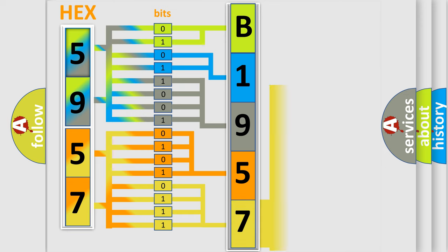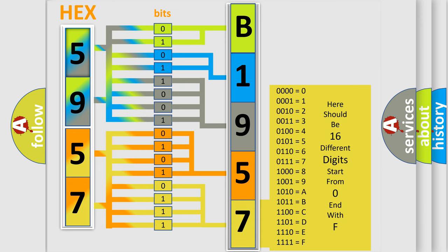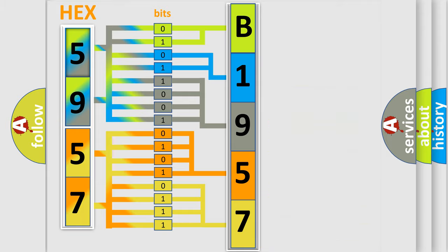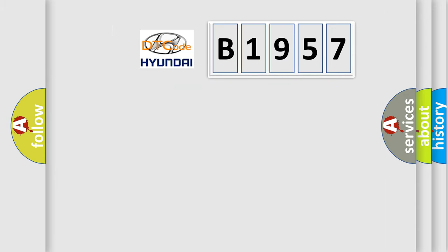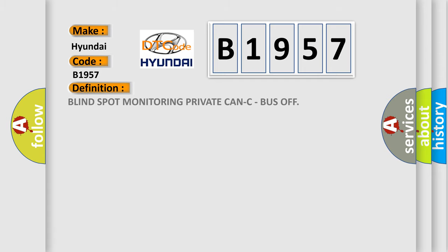A single byte conceals 256 possible combinations. We now know in what way the diagnostic tool translates the received information into a more comprehensible format. The number itself does not make sense to us if we cannot assign information about what it actually expresses. So, what does the diagnostic trouble code B1957 interpret specifically for Hyundai car manufacturers?